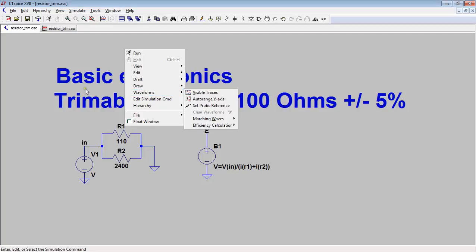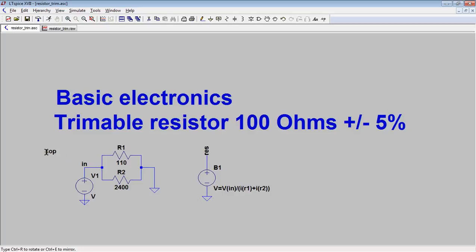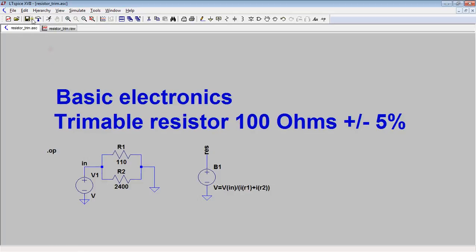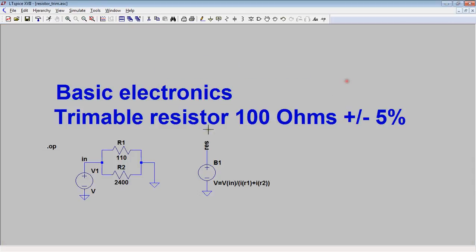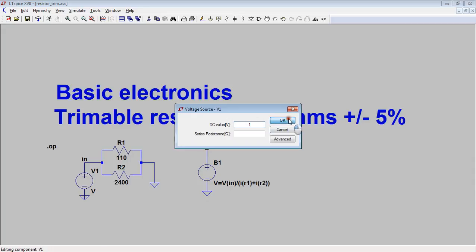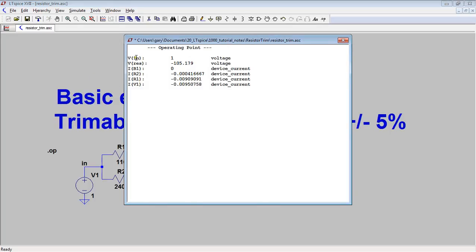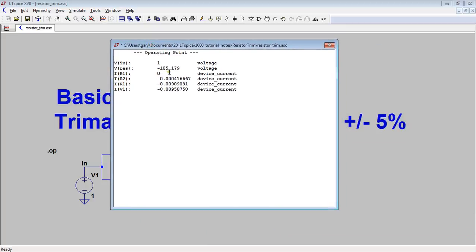So I run the simulator. I just need a DC operating point. Set it up, edit simulation command, DC operating point. Okay, right. Vin, I haven't set my voltage. Okay, so this can happen. Right, voltage only one volt. Right, okay, let's run it again. There you go. Vin is one volt, V res which is the resistance is 105.179 ohms.